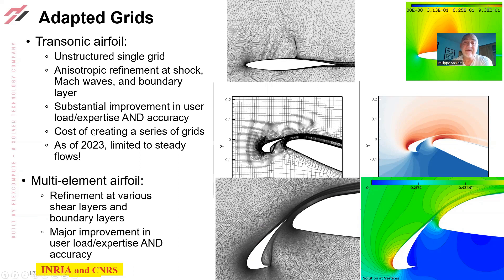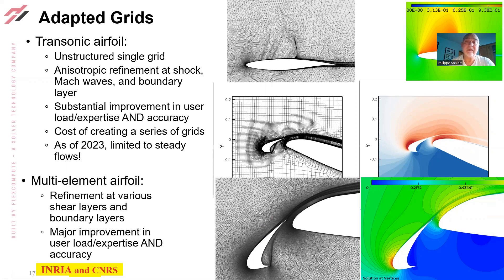On the other hand, there's a cost of creating a series of grids. You want to start with a very coarse grid, and although this last grid is beautiful, you have solved the problem about ten times. Adaptation is pretty complex, and some people say it's really hard to do on GPUs. Also, as of now, it's limited to steady flows — if you had a simulation with buffet and the shock were moving back and forth, you would not be able to do this.